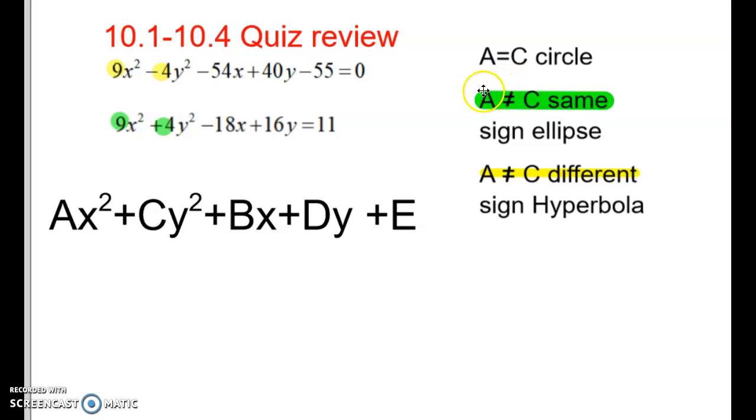I don't have a circle example here. As you can see in this one, A and C are different numbers, different signs, positive, negative. Different numbers, different signs, that's a hyperbola right there. Different numbers, same sign, that's an ellipse.